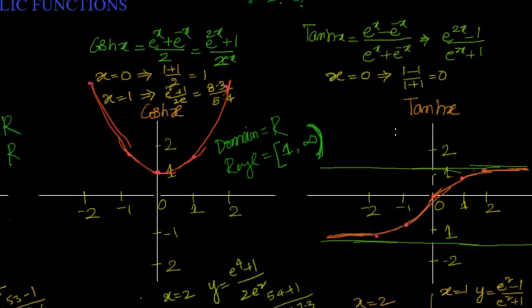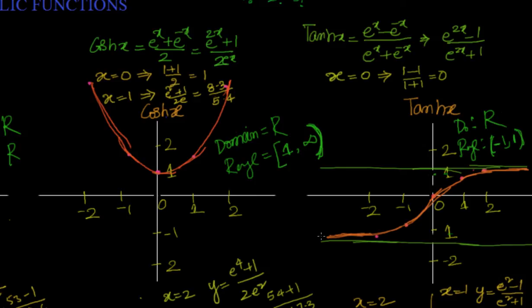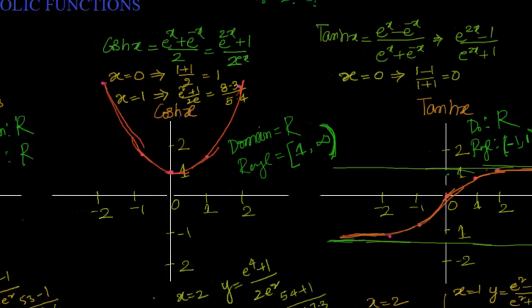For hyperbolic tangent, the domain is ℝ. What is the range? The range will not exceed 1 or go below minus 1 — it is between minus 1 and 1, written as (−1, 1) with round brackets. Why are square brackets not used? Because the function never actually equals 1 or minus 1 — there is always a little difference. So the range is the open interval from minus 1 to 1.